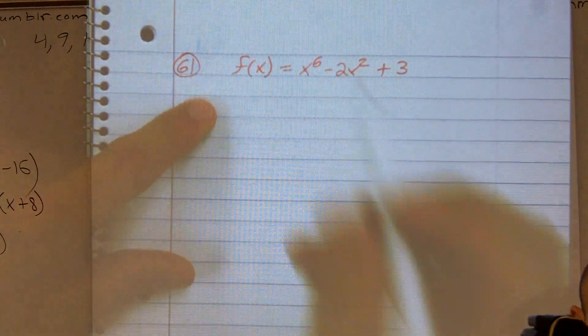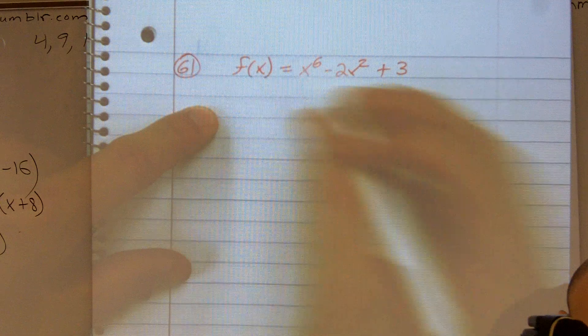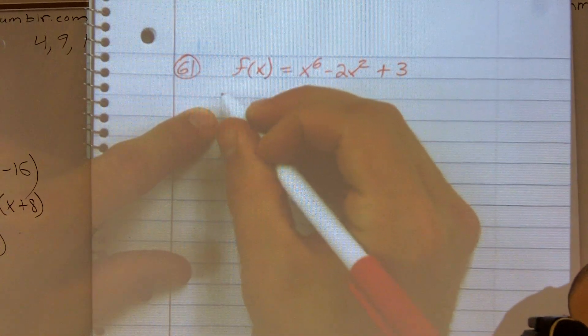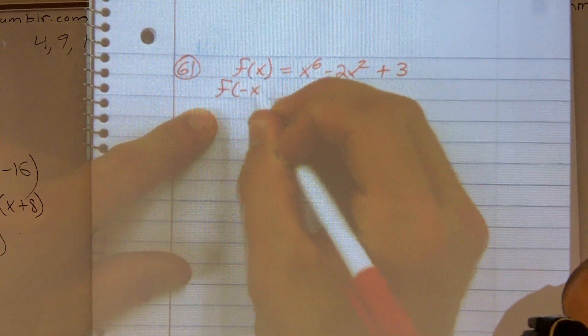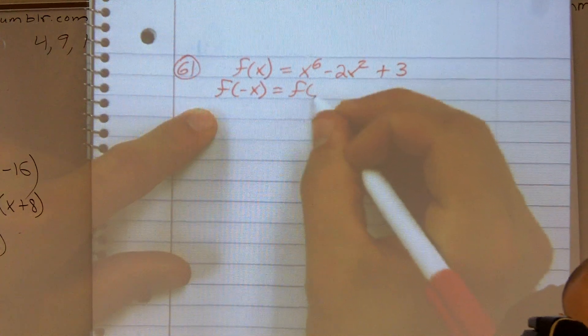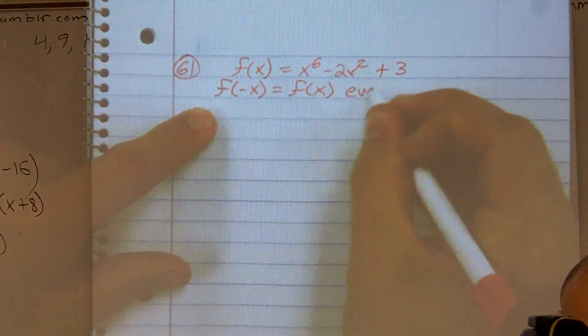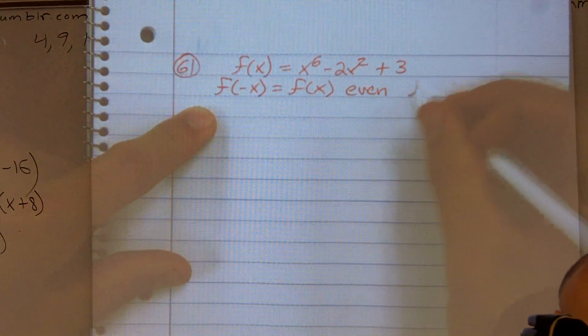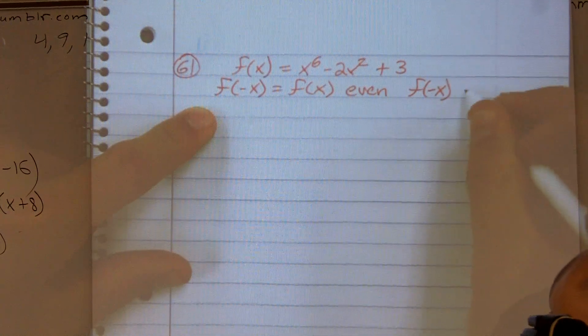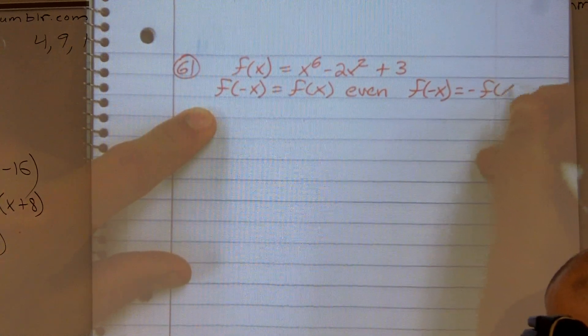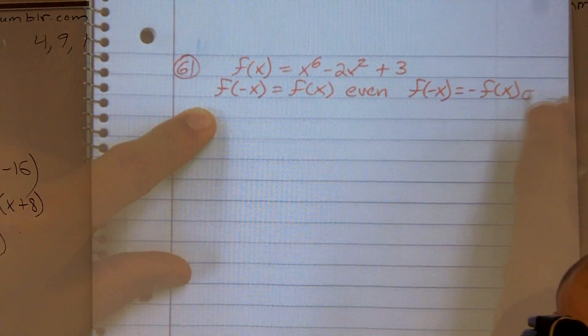So here are our two rules. To determine if it's odd or even, we need to figure out if I plug in a negative x, and if I get f of x back, it's even. And if I do f of negative x, and I get negative f of x, it's odd.